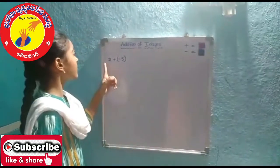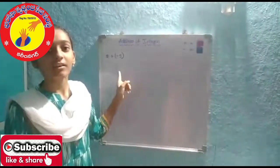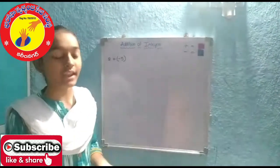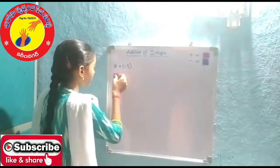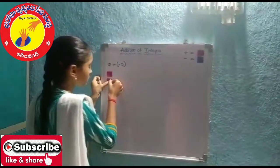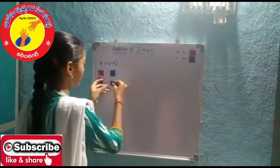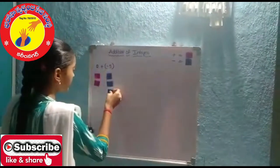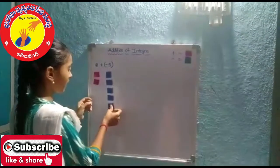Here is the second question: 2 plus negative 5. It means we have to take 2 positive integers and 5 negative integers. 1, 2, and 5 negative integers: 1, 2, 3, 4, and 5.